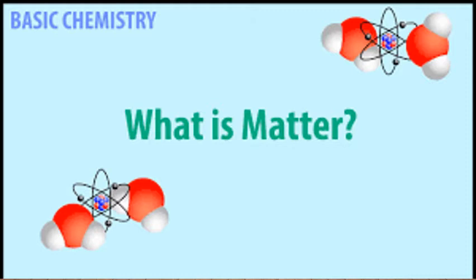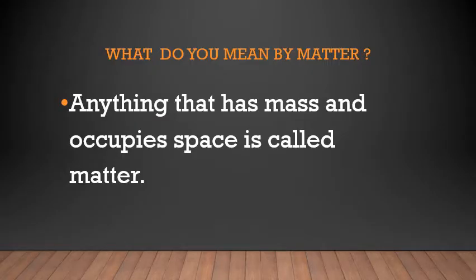Particles present in matter can be visible or invisible. Matter is made up of very minute particles; hence visible matter consists of invisible particles. They have asked: what do you mean by matter? The definition is: anything that has mass and occupies space is called matter.